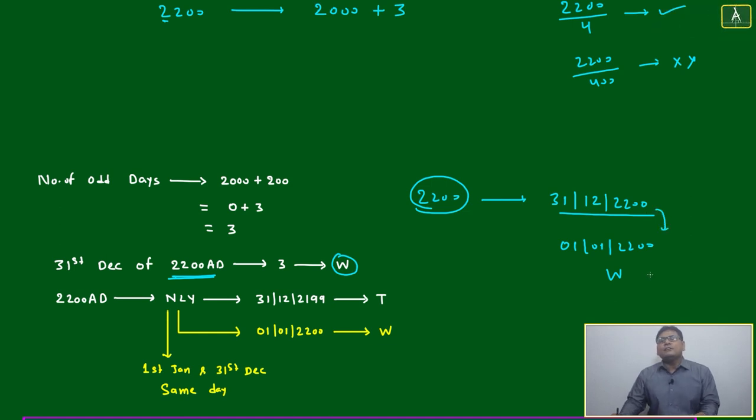In a non-leap year, first January and 31st December will always be the same. 31st December if it is Wednesday, this also will be Wednesday. We are confident enough we can say.